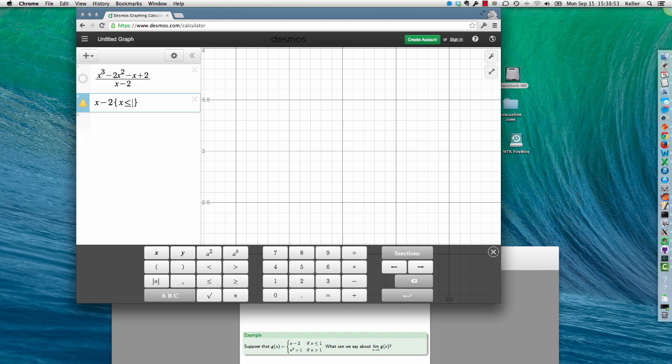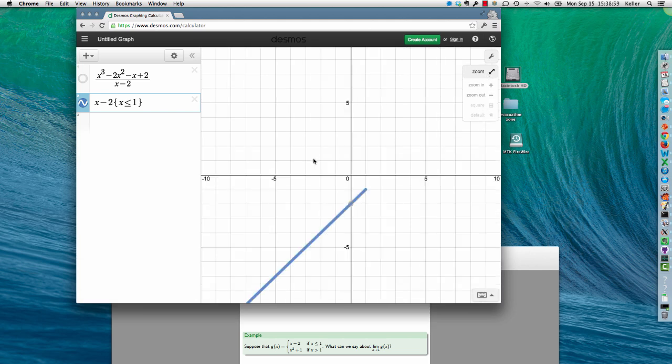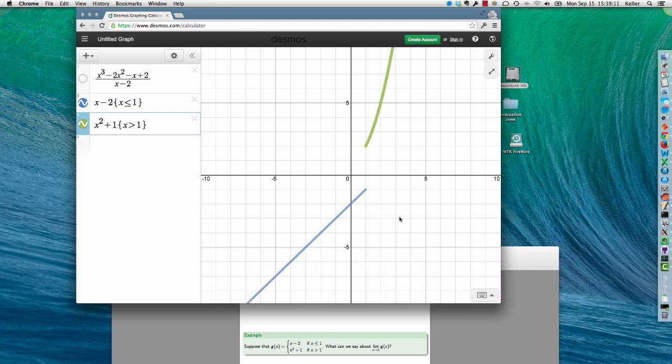And then 1. Let's just zoom to the default. Okay. And then we need another piece. We need x squared plus 1, and we need that for x greater than 1. All right. Let me get the keyboard out of the way.